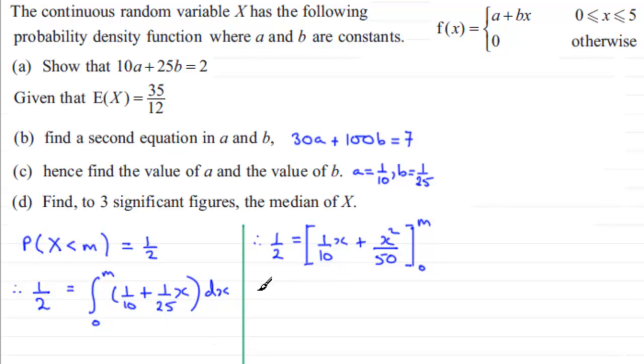So we substitute m in. Okay, first of all, what's that going to give us? It's going to give us a 10th m or m over 10. And then substitute m into here. We've got m squared over 50. And then we would just subtract what we get when we put 0 through. Well, that's going to be 0. So we'll just put that as minus 0 at this stage.